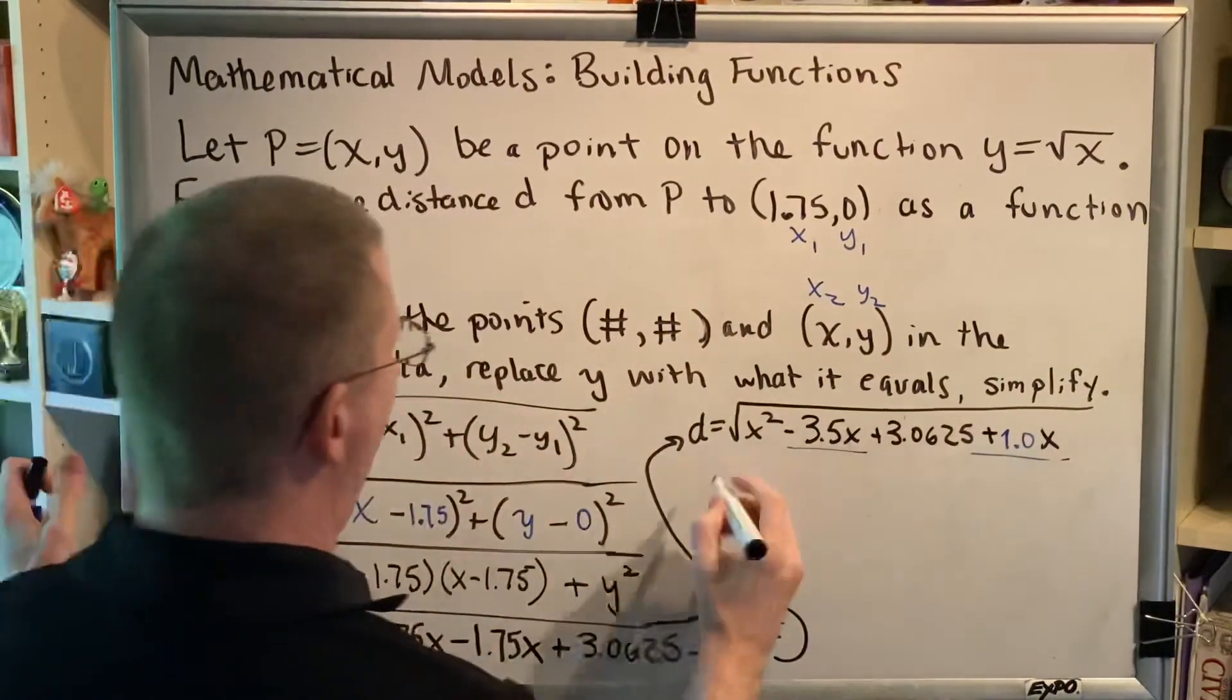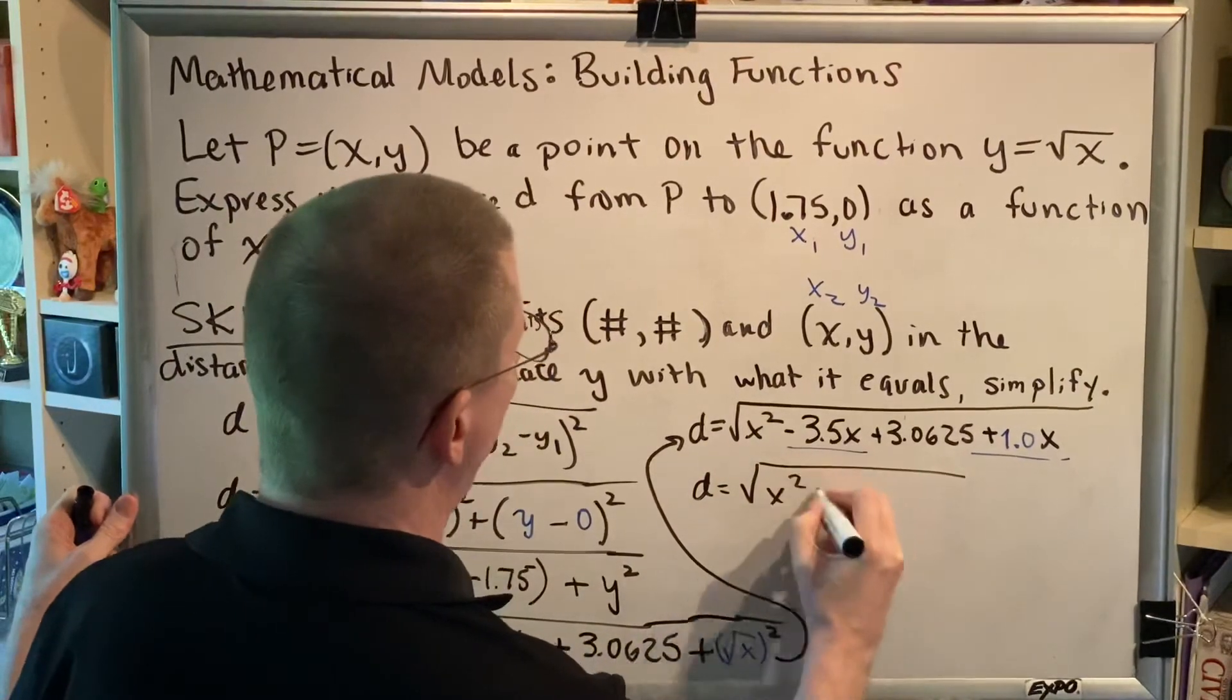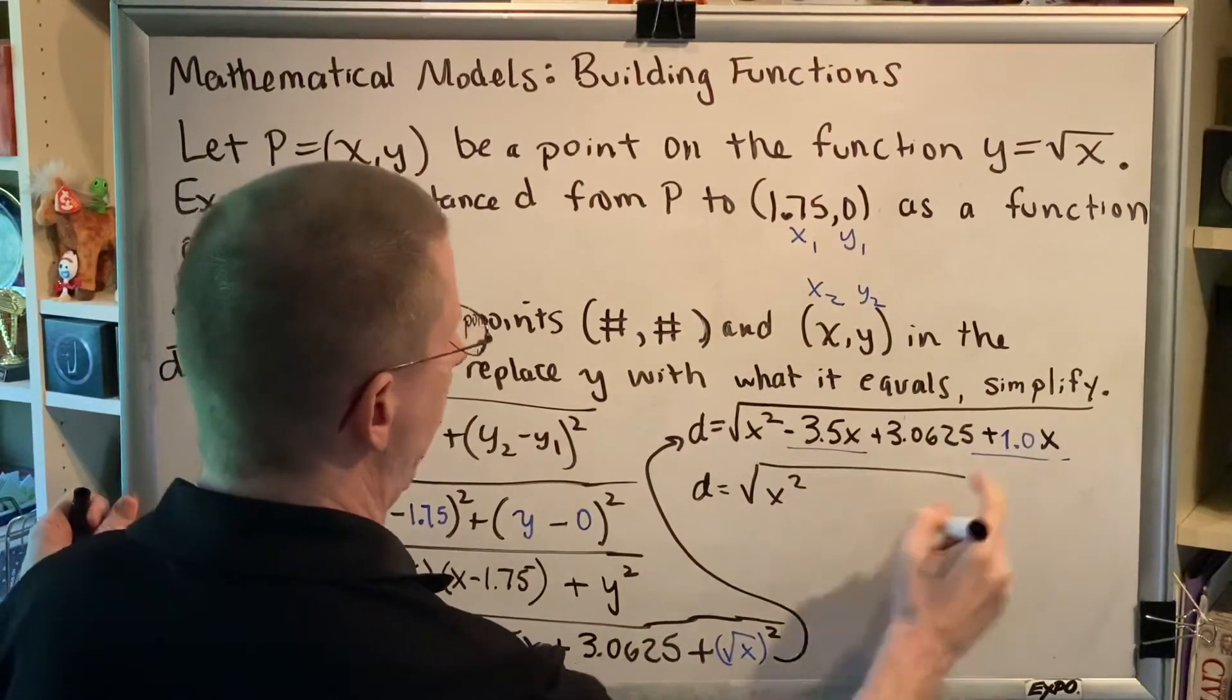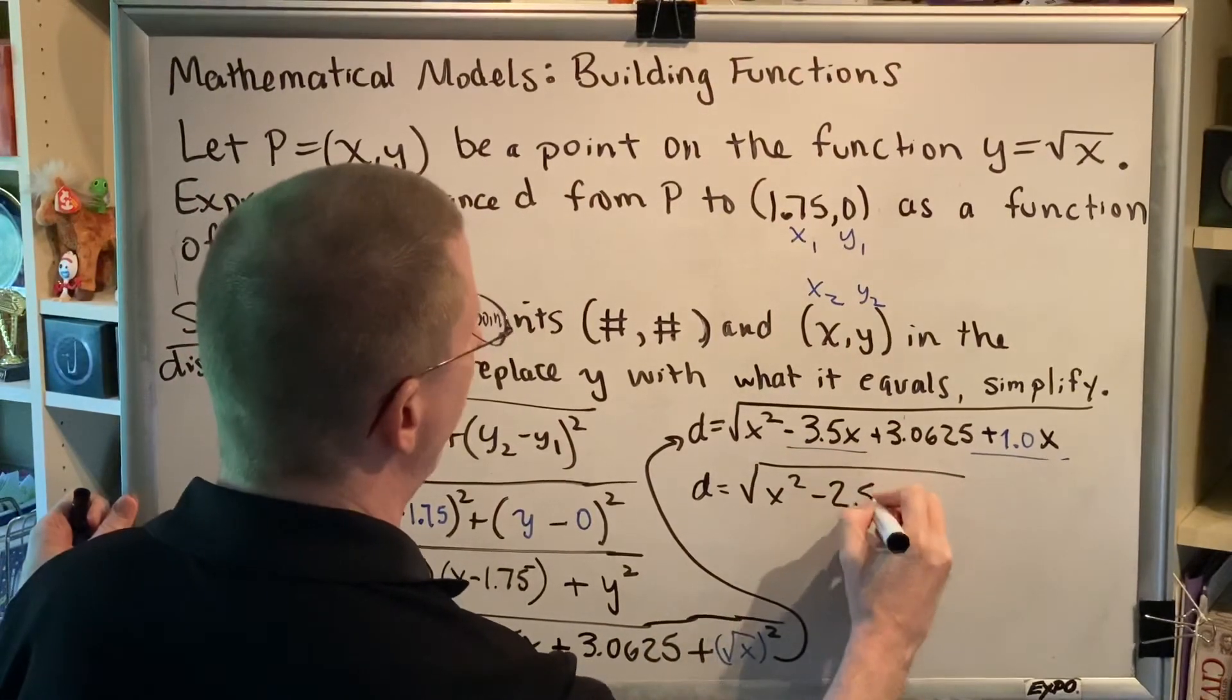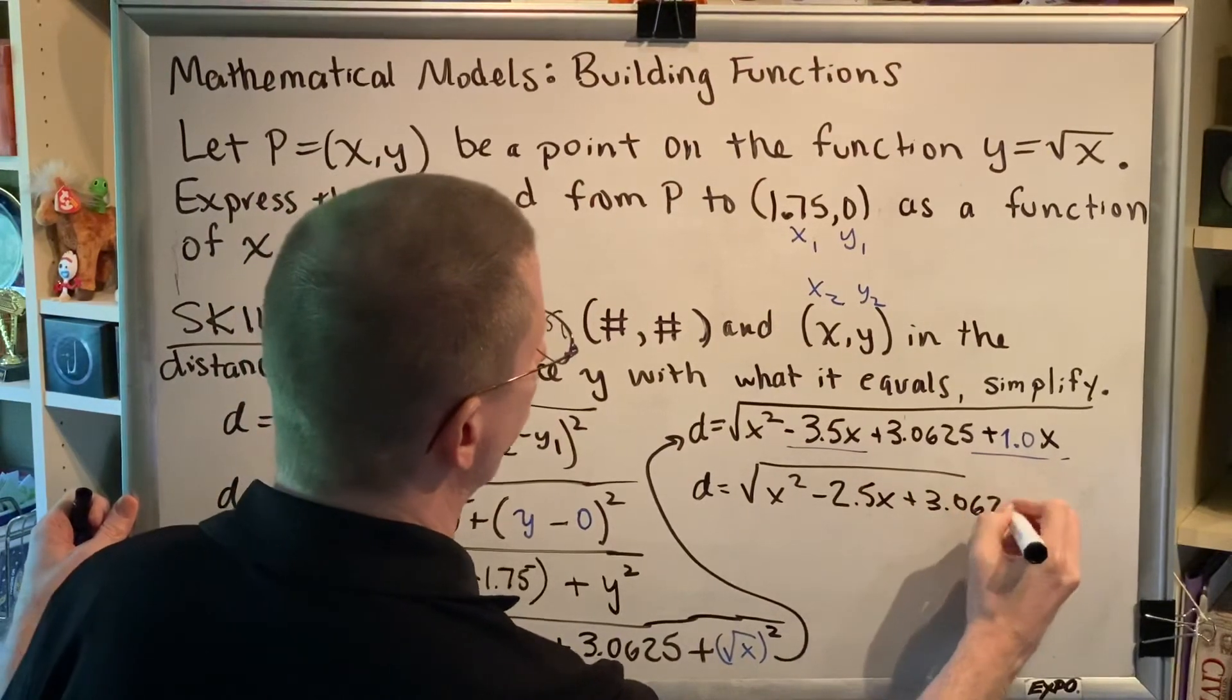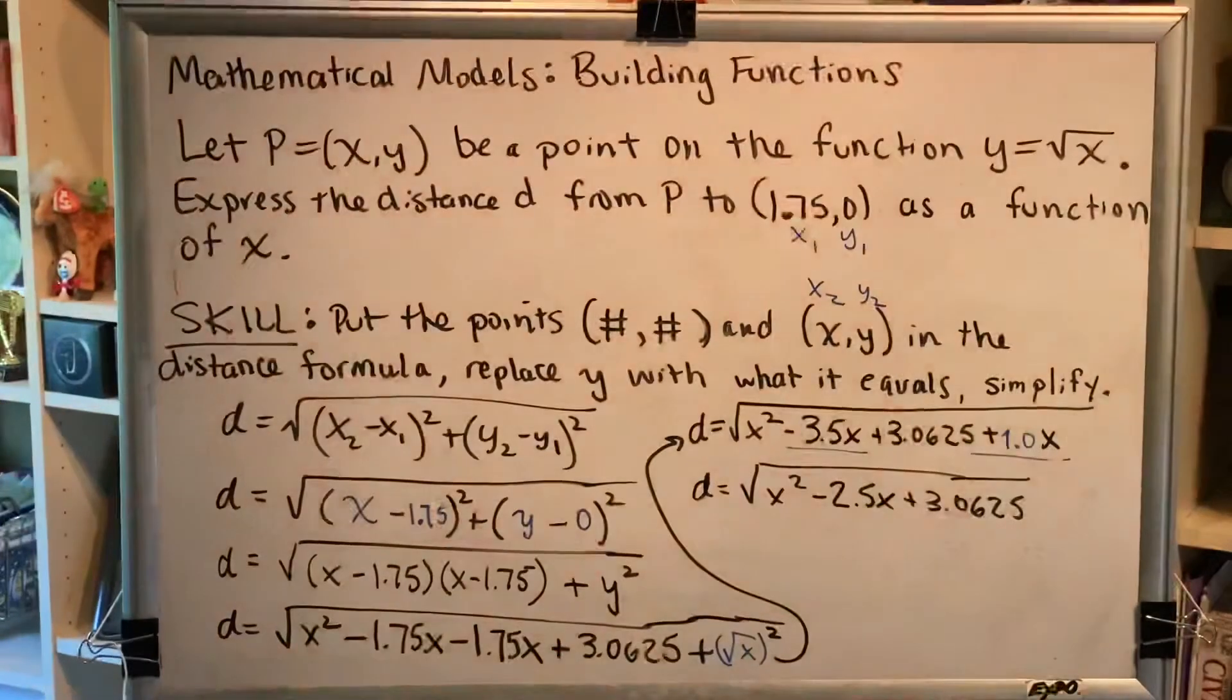All right, so then I'm going to have d equals the square root of x² negative, -3.5 plus 1.0 makes -2.5x plus 3.0625. All right, so I've simplified as much as I can. There's only one more thing to do in this problem.